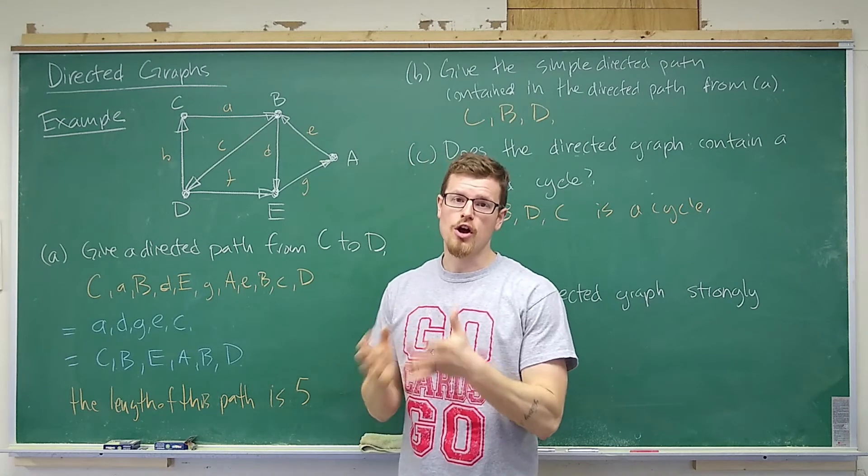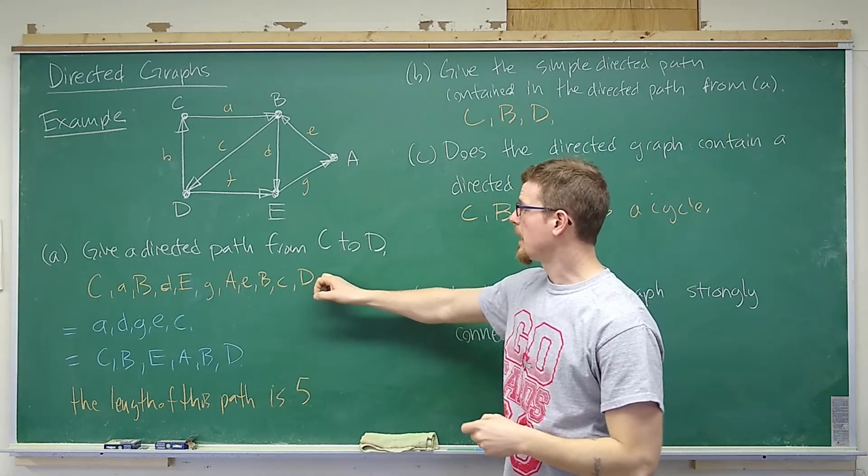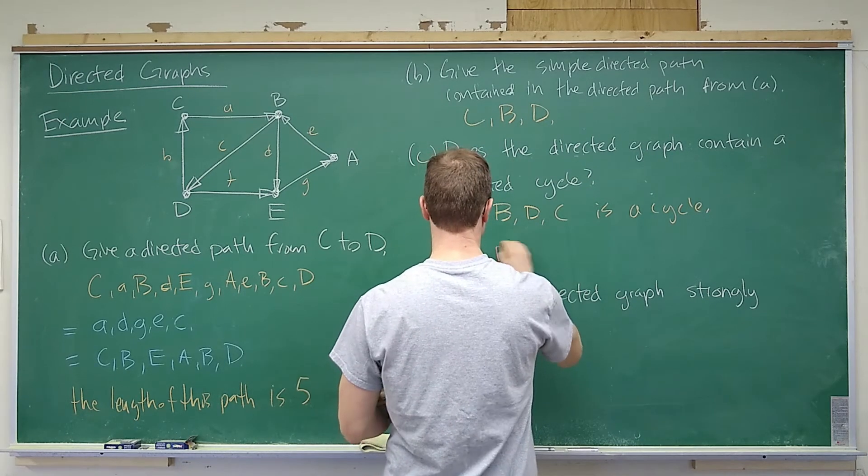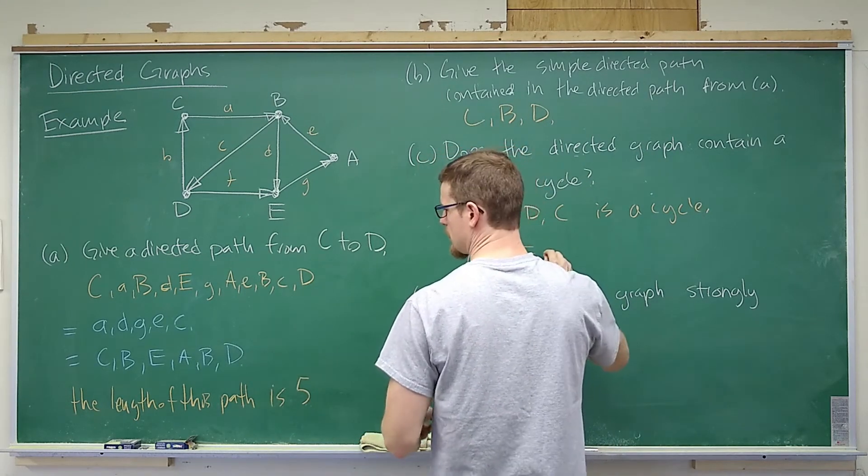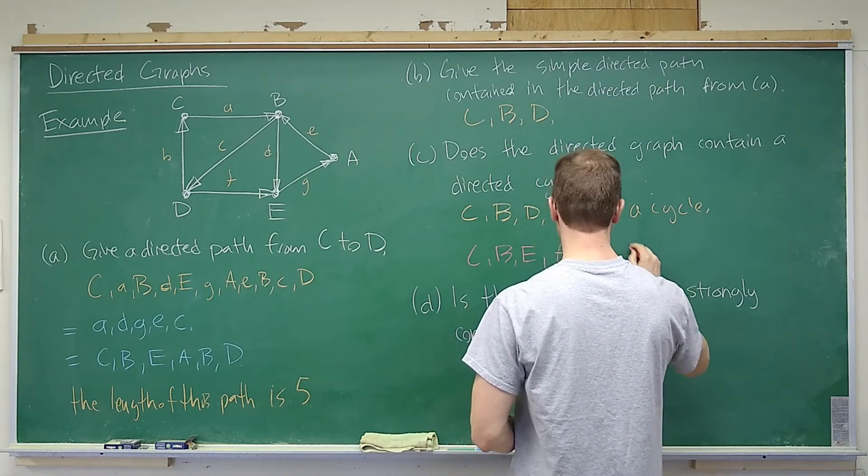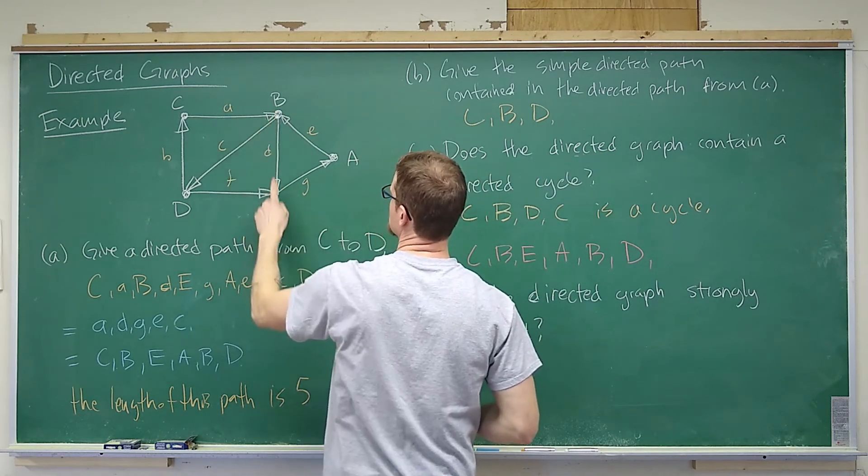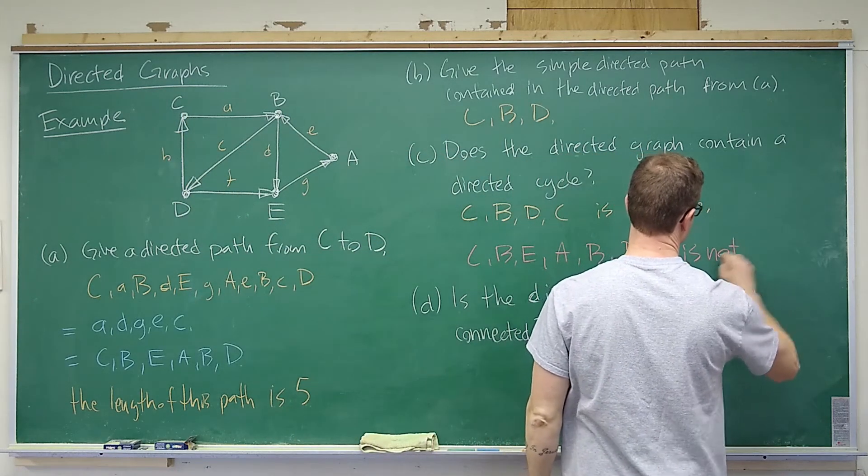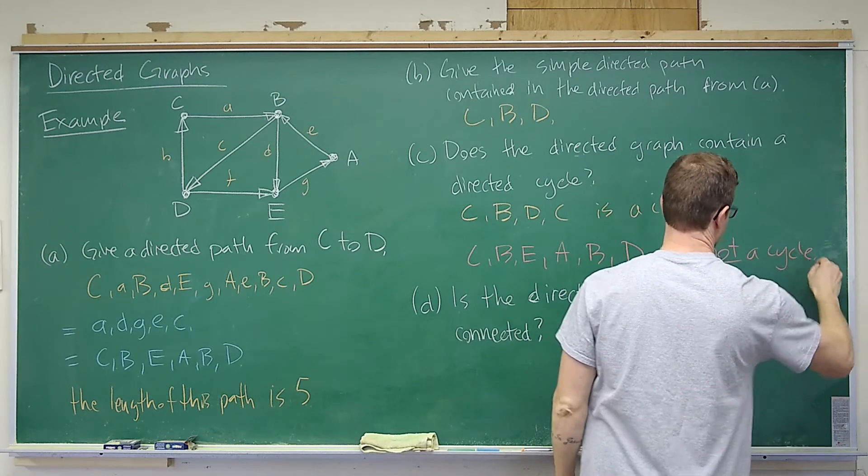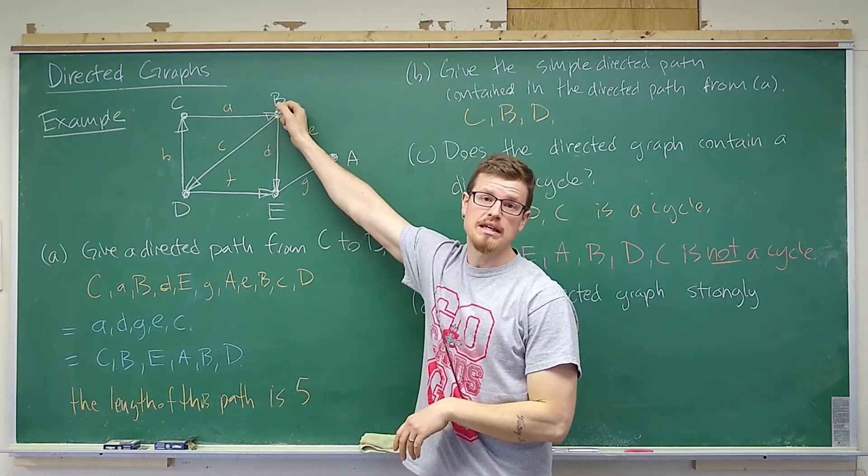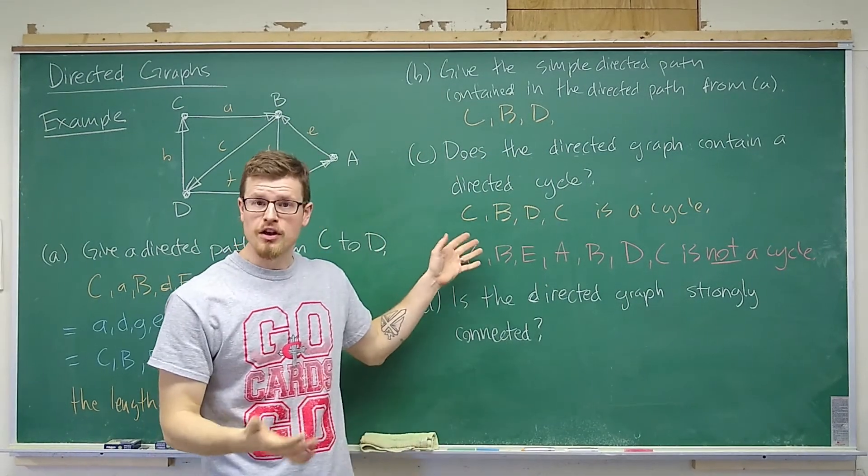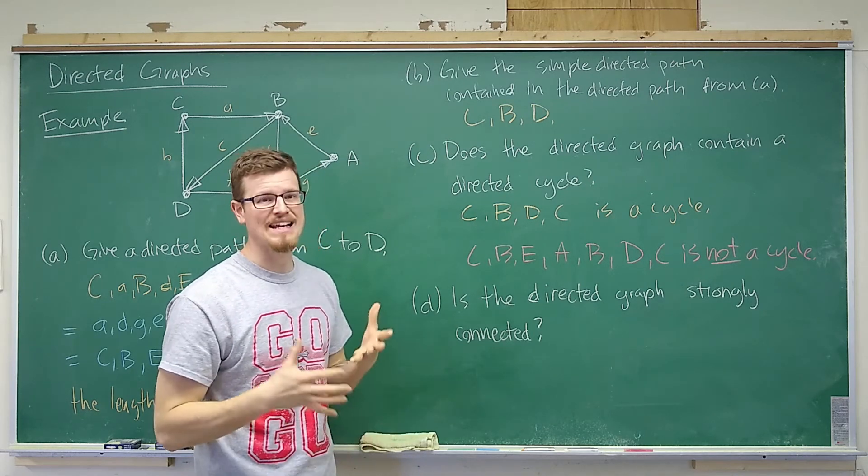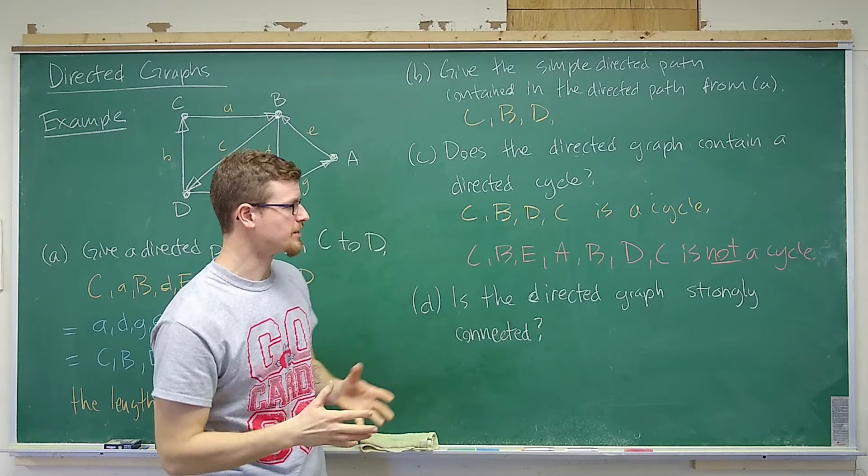But what I'd like to emphasize also is that if we were to consider this thing and bring ourselves back to C at the beginning. So if I were to consider C, B, E, A, B, D, C, B, E, A, B, D, we're returning back to C, this is not a cycle. It is not a cycle because we visited the vertex B twice. That's the problem there. This is called a circuit because we have traveled a path that begins and ends at the same place, at the same vertex. But it is not a cycle. A cycle does not allow for vertices to be visited twice.